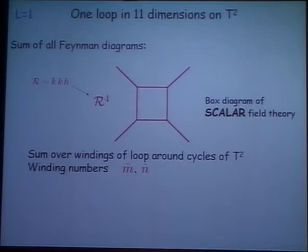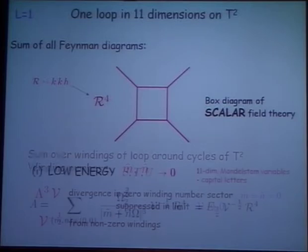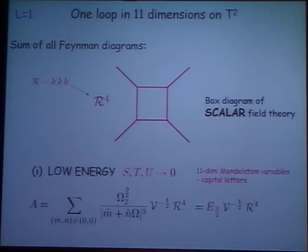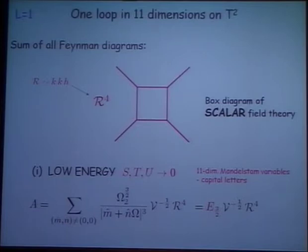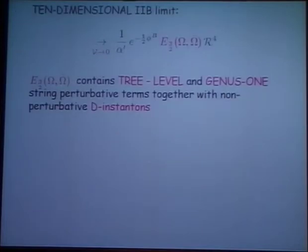The simplest examples come from one loop. One loop on a two-torus — this is an old story — the loop can wind around the two-torus in two different directions, so there are two winding numbers M and N. When you work out the result, you find that for the leading term at small S, T, and U, the leading term has an Eisenstein series with some power of the volume of the torus times R to the fourth. And that exactly reproduces what was known about the R to the fourth term in string theory. So if I translate from M-theory to string theory, I get this term in string theory which contains exactly the string theory tree level and genus-one pieces.